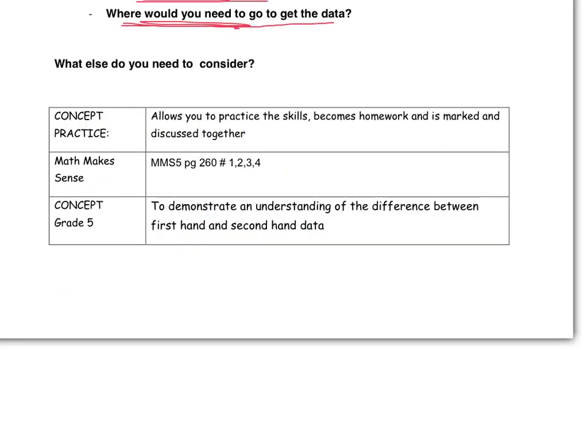Concept practice: page 260, numbers 1, 2, 3, and 4 — to demonstrate an understanding of the difference between first-hand and second-hand data. What's first-hand data? What's second-hand data? How has it been collected? Go ahead and do those questions now. If you have any questions along the way, please ask. Thank you.